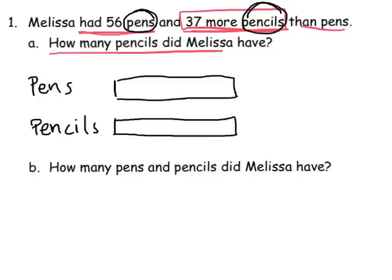All right, so once I've started that, that's my setup. Now, I'm going to go back, and I'm going to read the question again. It says, Melissa had 56 pens. So, that means we can label this 56, because we are told Melissa has 56 pens.